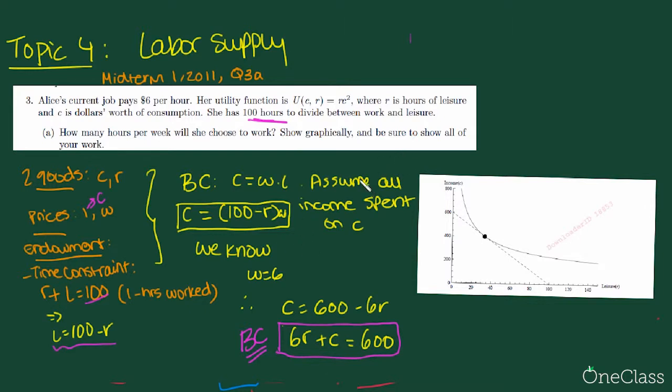So how are we going to derive our budget constraint? We're assuming that all our income is spent on C. So we start by saying how much can we make? And we know all of that is going to equal our consumption. So our level of consumption is going to have to equal our wage times the number of hours we work.